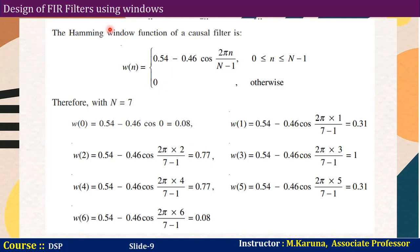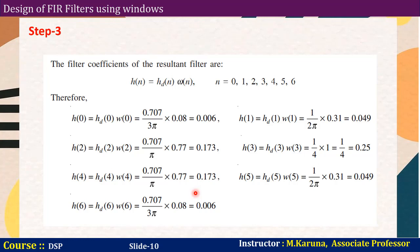For the Hamming window, you can use either of the two equations. Here we use the Hamming window equation with N equal to 7. Substitute n equal to 0, 1, 2, 3, 4, 5, 6 into the formula to obtain 7 samples. Now the filter coefficients of the resultant filter are obtained as h of n equal to HD of n multiplied by the window sequence. So HD of 0 times W of 0 gives H of 0, with value 0.006. Likewise compute H of 1, H of 2, H of 3, H of 4, H of 5, H of 6. These are the filter coefficients of the resultant filter.